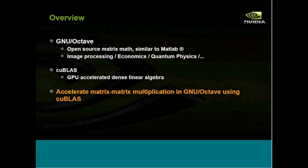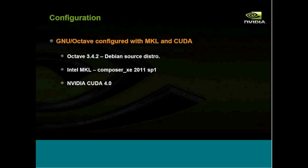Exactly what we're going to do is accelerate the matrix-matrix multiplication in GNU Octave using CUBLAS. We're using the latest versions of GNU Octave, NVIDIA CUDA, and Intel MKL. We're not just comparing against the generic BLAS routines distributed with GNU Octave — we're comparing against the Intel Math Kernel Library, or Intel MKL, which is really the next best alternative.